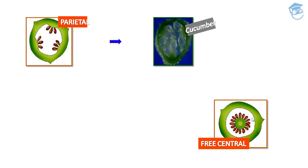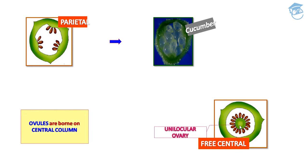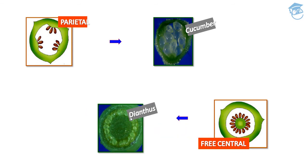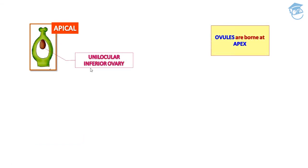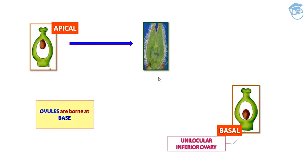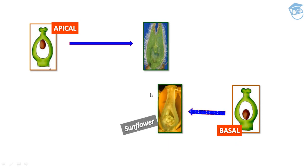Free central placentation — all ovules are attached to a central column in a unilocular ovary, seen in Dianthus. Apical placentation — ovules are borne only at the apex of the unilocular inferior ovary. Basal placentation — ovule is attached at the base of the unilocular ovary, seen in sunflower.